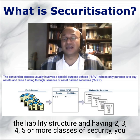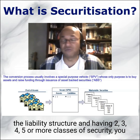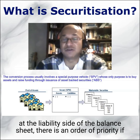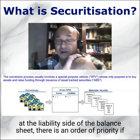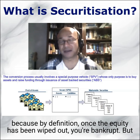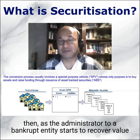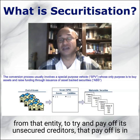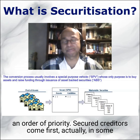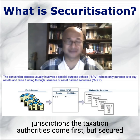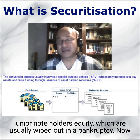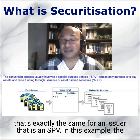By tranching the liability structure into two, three, four, or five or more classes of security, you build an order of priority — just like in a normal corporate entity. If a corporate entity goes bust, the equity holder loses out first by definition. Then, as an administrator recovers value to pay off creditors, the payoff follows an order of priority: secured creditors come first, then unsecured creditors, and then the most junior noteholders — equity — which are usually wiped out in bankruptcy. The same applies to an SPV issuer.